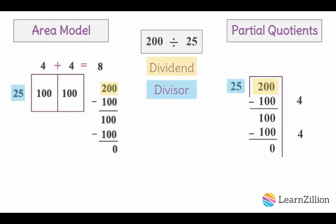Now it's time to add together the partial quotients. Four plus four equals eight. So eight cases of water were ordered by Mrs. Hall.